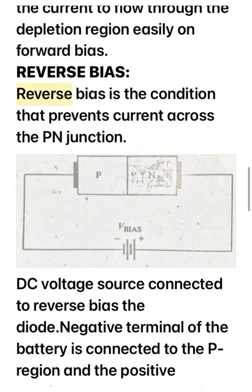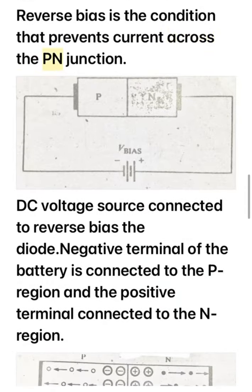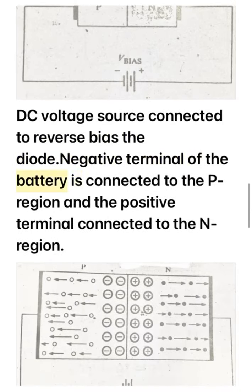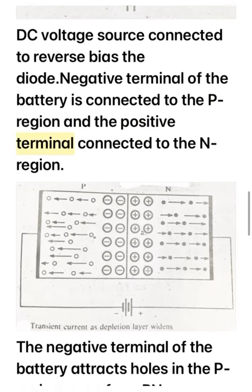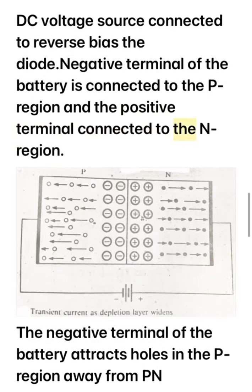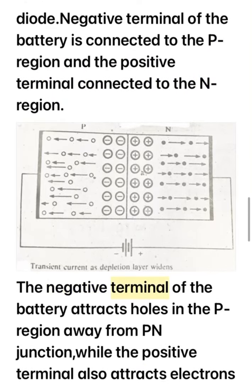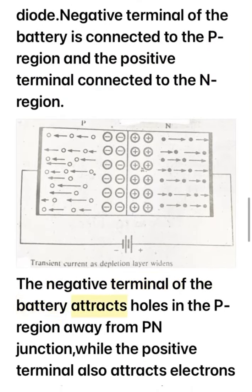Reverse bias is the condition that prevents current across the P-N junction. A DC voltage source is connected to reverse bias the diode: the negative terminal of the battery is connected to the P region and the positive terminal is connected to the N region.